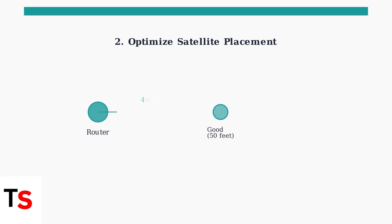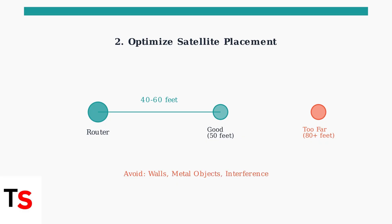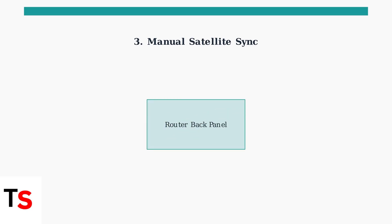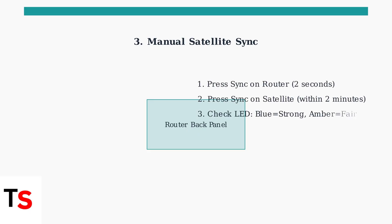Next, check your satellite placement. Poor positioning is a major cause of connection issues. Satellites should be placed within 40 to 60 feet of your router. Avoid placing satellites too far away or behind obstacles like walls and metal objects. Elevated open locations work best for optimal signal strength. If satellites still won't connect properly, try manually syncing them using the sync button on both your router and satellites. Press and hold the sync button on your router for two seconds, then do the same on each satellite within two minutes. The LED lights will indicate connection status: blue for strong, amber for fair connection.